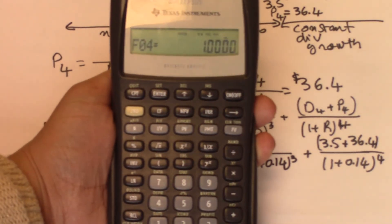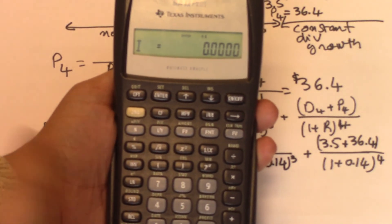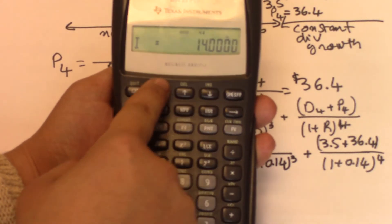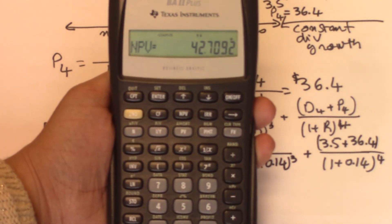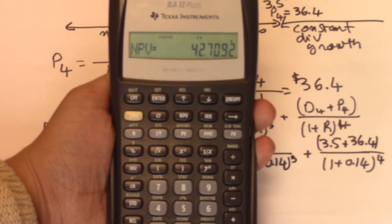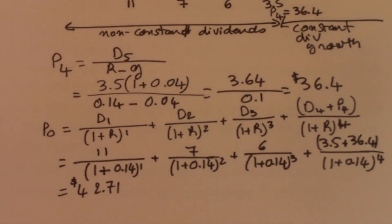Now we have inputted all of our cash flows. You hit NPV. You're going to be asked for the I. The I is 14, enter, down arrow. And then CPT. The price is 42.7091 or $42.71, which is what we have found before.